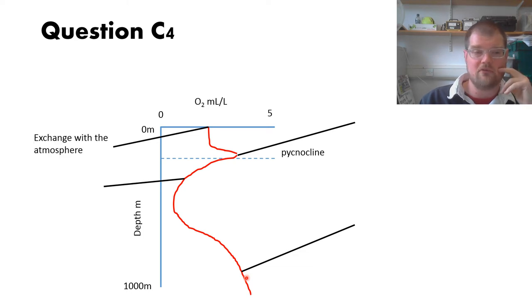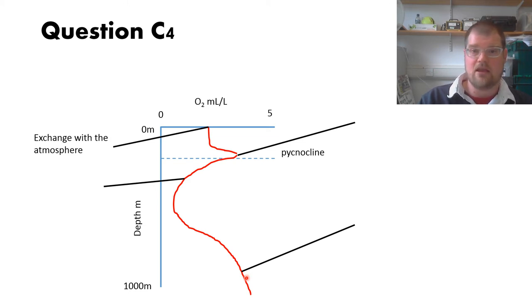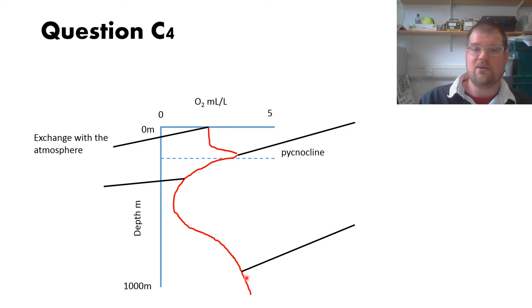Most people got those features. For the surface exchange, you'd have gotten more credit for mentioning Henry's Law — how the solubility of gas between the atmosphere and the ocean depends particularly on temperature, as well as how disturbed the sea surface is: more wind and waves makes the exchange faster, and to a certain extent salinity also affects actual solubility.